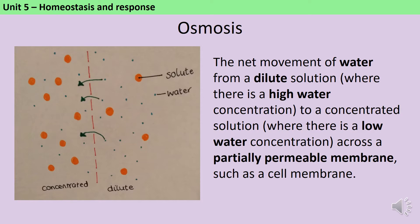In this diagram you can see that the water is moving from the right to the left because even though there's about the same amount of water on both sides, there are far fewer solutes on the right. So the water moves from the right to the left in order to dilute the solutes on the left so that the overall concentration is the same.